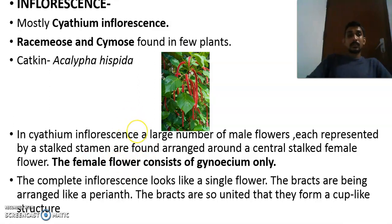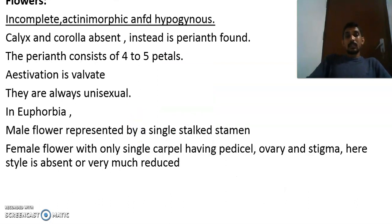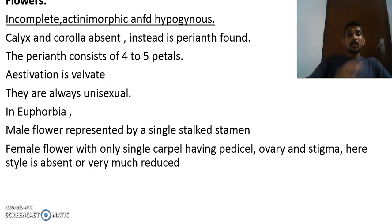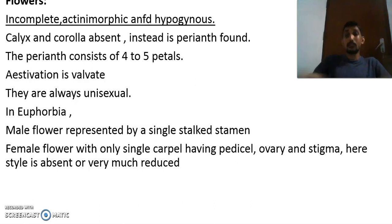The flowers are usually incomplete because male and female flowers are separate. For a flower to be complete it must contain calyx, corolla, androecium, and gynoecium. In the cyathium, the male flower has only stamens and the female flower has only a carpel — all other parts are absent. That is why the flower is incomplete. They are actinomorphic and hypogynous.